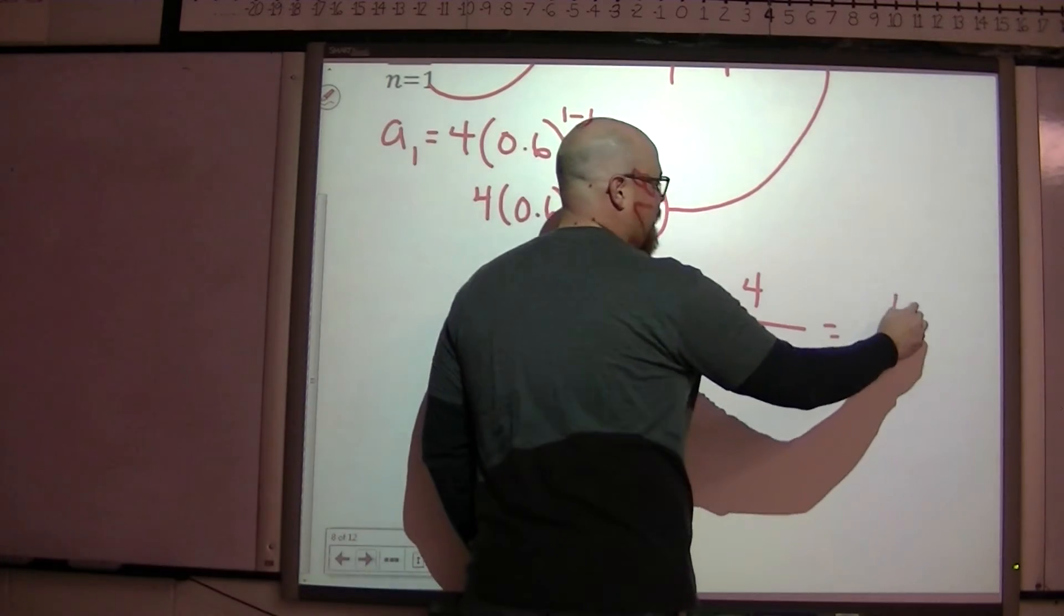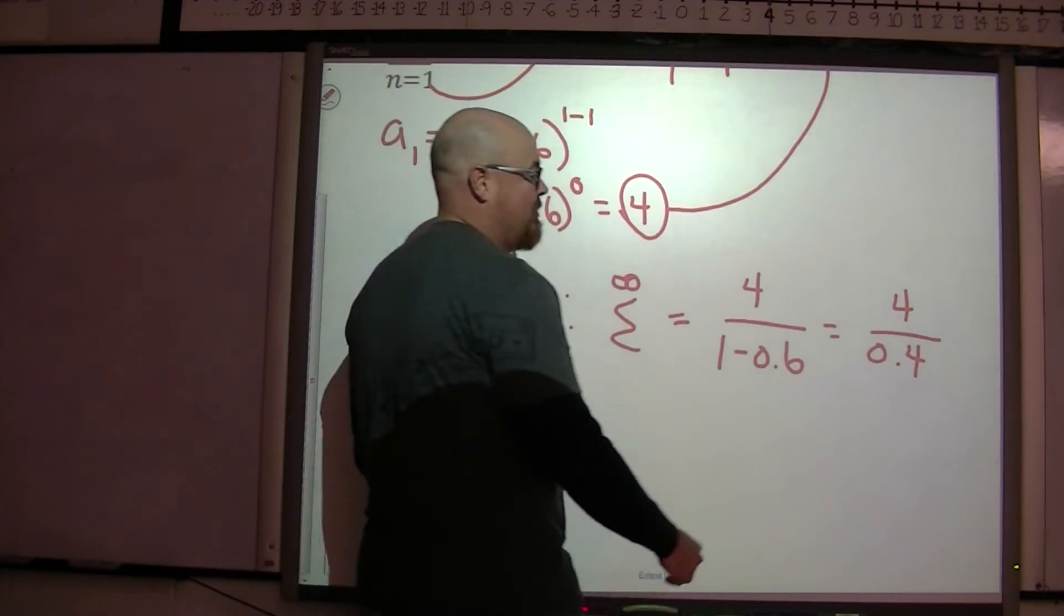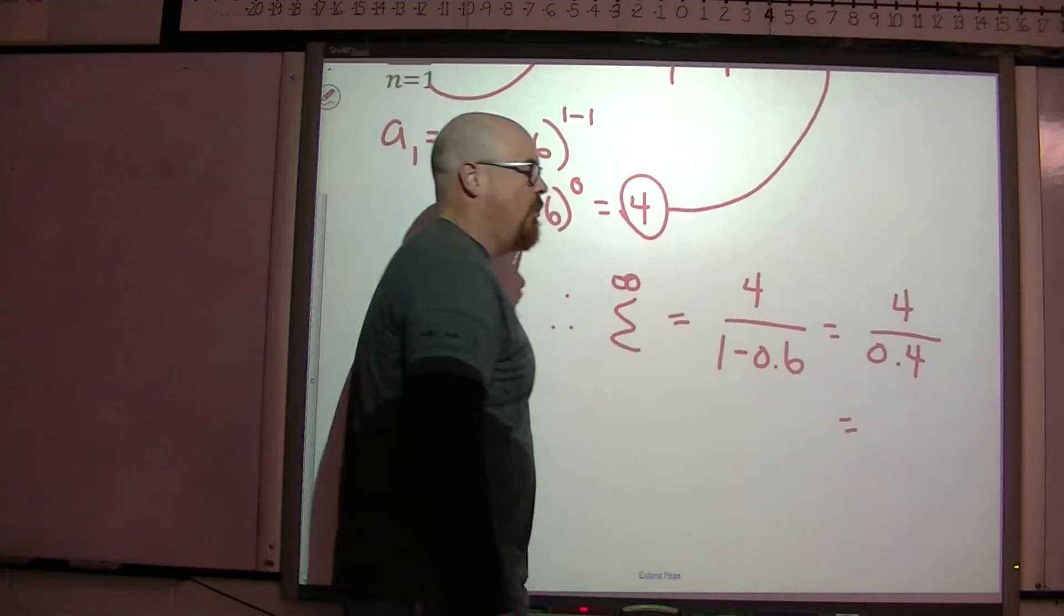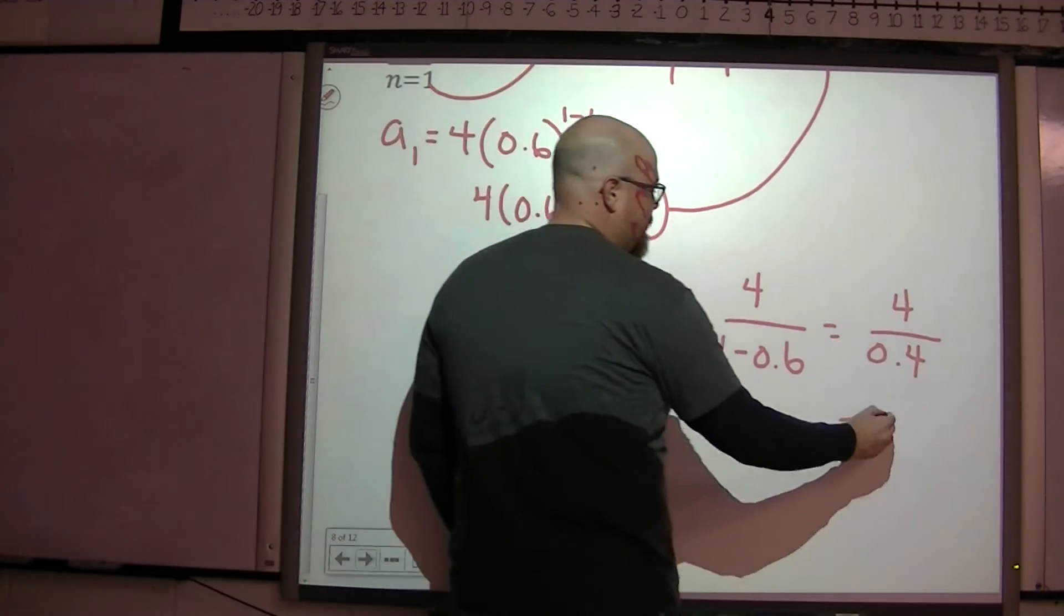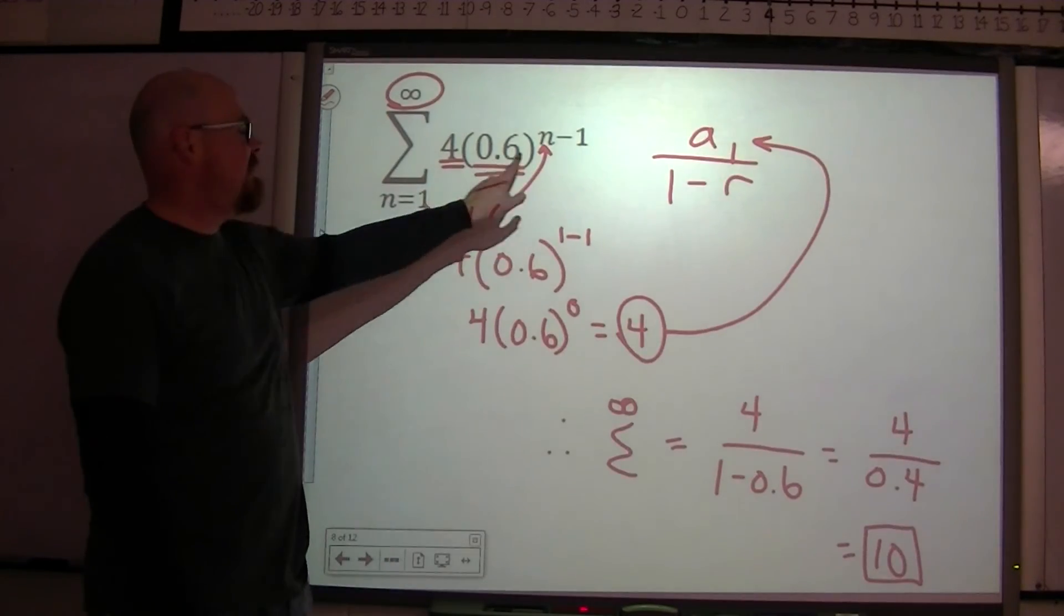Which is equal to 4 over 0.4, which is 4 tenths. 4 divided by 4 tenths is 10. So if we added together every single term of this sequence, we would be approaching a value of 10.